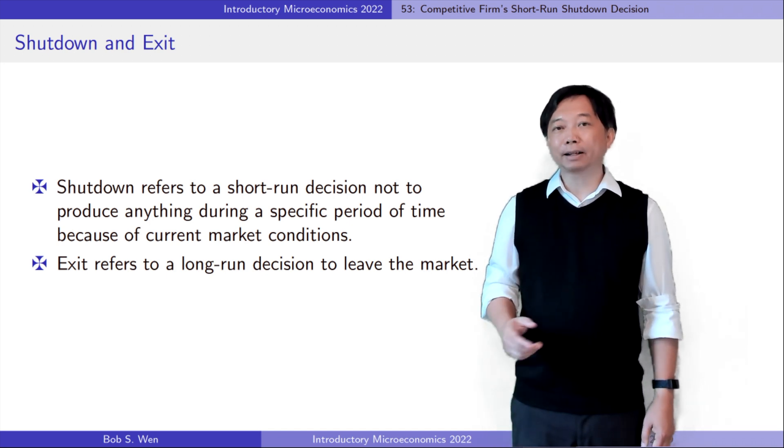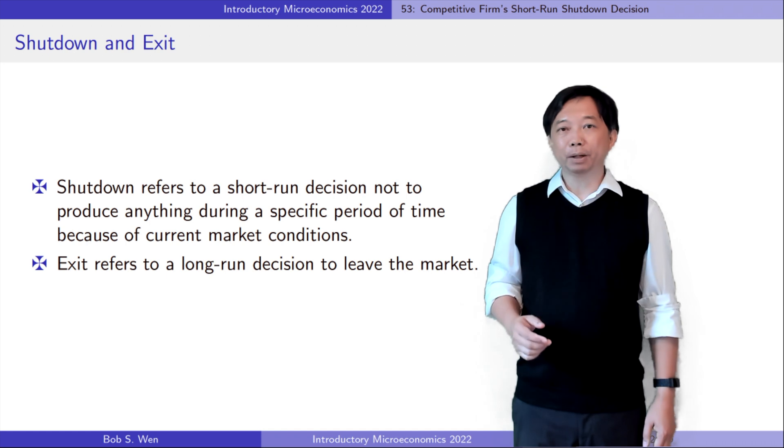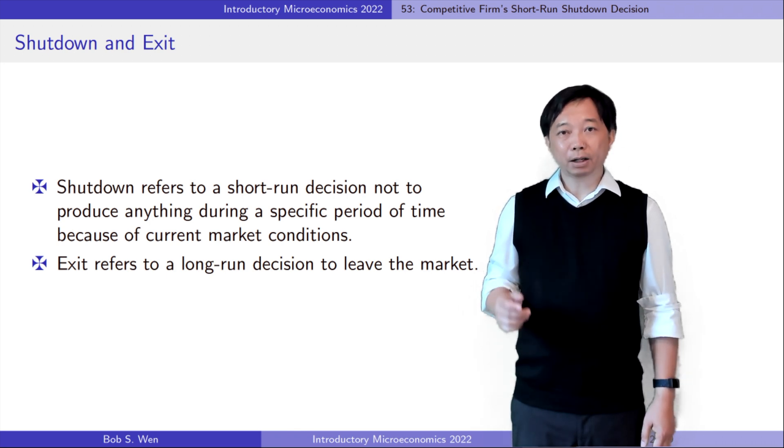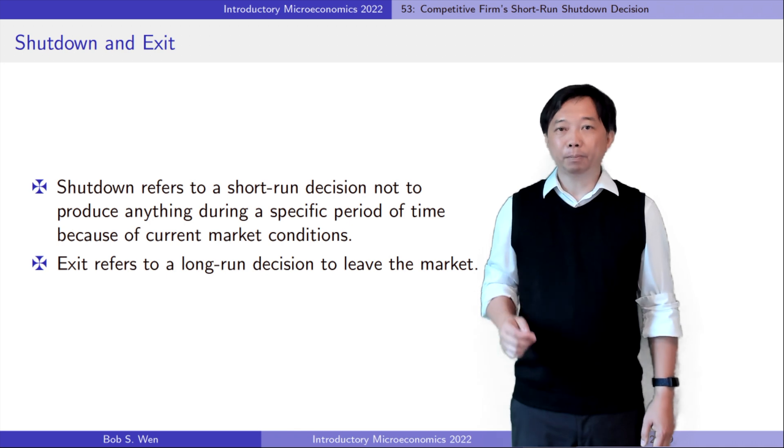Take our ice cream firm as an example. The investment in the ice cream machines and the rent of the factories are the fixed cost in the short run, while the workers' wages are the variable cost.